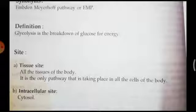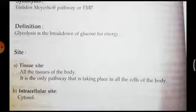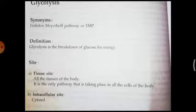Where does glycolysis take place? It takes place in all tissues of the body — whichever tissue you name, glycolysis takes place there. It is the only pathway that takes place in all cells of the body, making it a universal pathway. The intracellular site is the cytosol — within the cells of any tissue, glycolysis takes place in the cytosolic region of the cell.